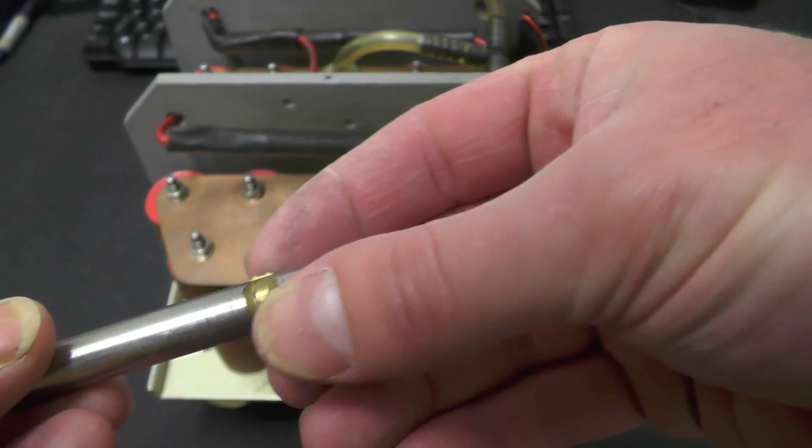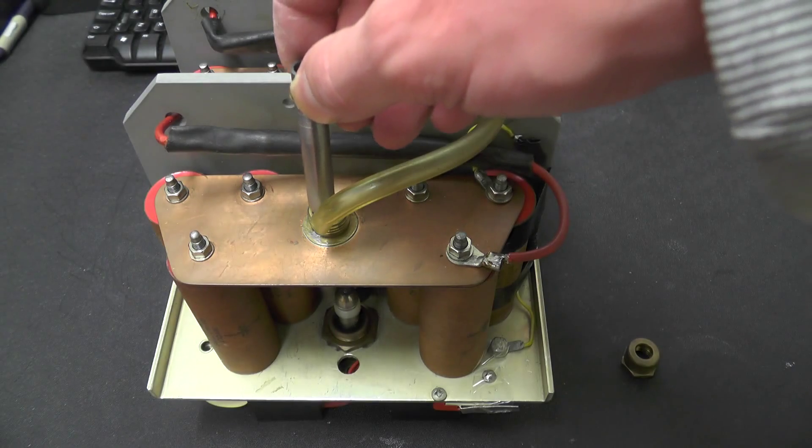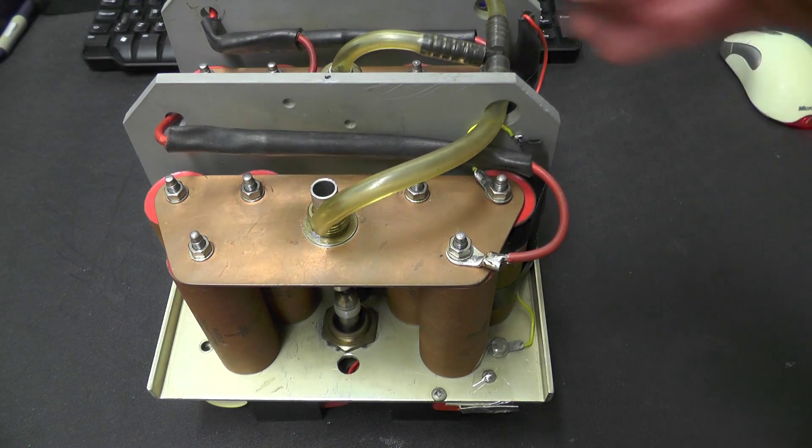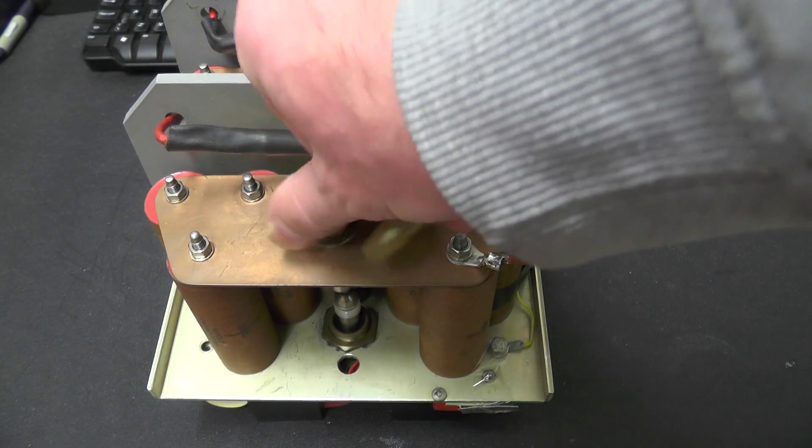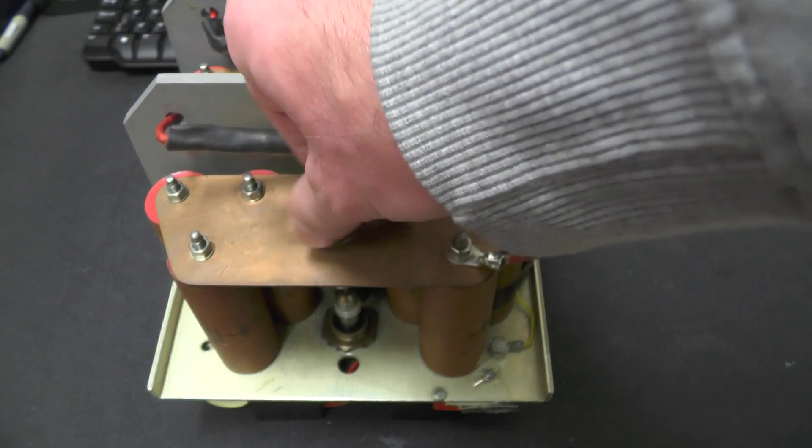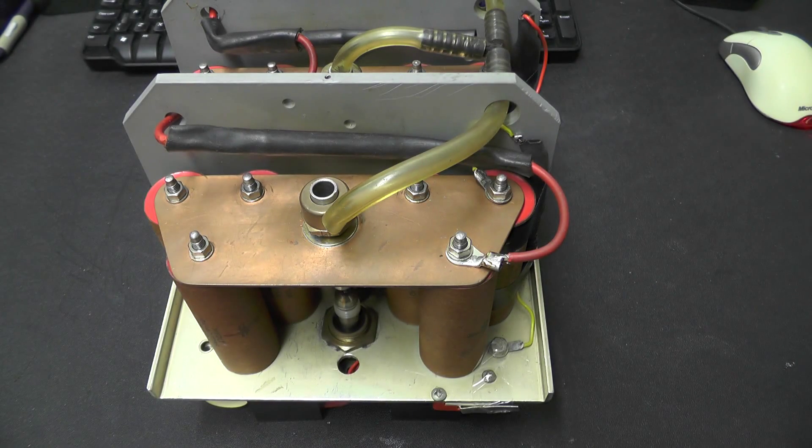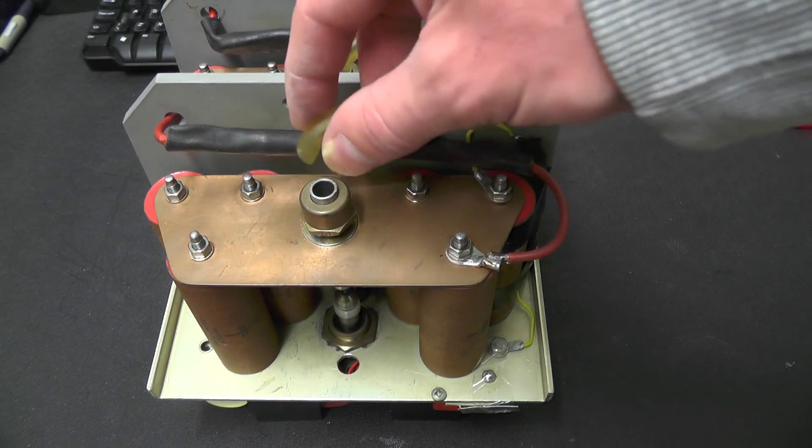So you just move this collar up and down and that adjusts the gap between the two electrodes. That was all really simple. After playing with that, I measured the gap to about 6mm, which is what the documentation says it should be.